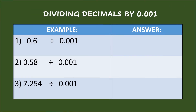Dividing decimals by one-thousandth. First example: six-tenths divided by one-thousandth. The divisor has three decimal places, so move the decimal point in the dividend three places to the right and annex zeros in the vacant place values. Put the decimal point afterwards. So the answer is six hundred.